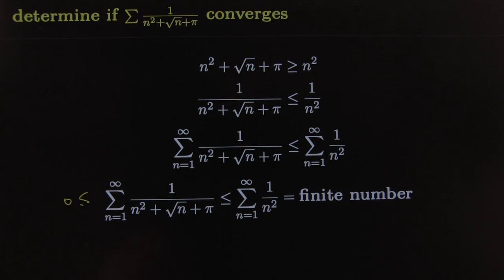If a sequence is bounded and monotone, monotone increasing and bounded above forces it to converge.